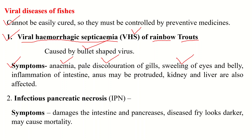Further symptoms of VHS include oedema of muscles, inflammation of the intestine, and sometimes sores may appear on the skin. The anus may protrude, and the kidneys and liver are also affected in this disease. These are the common symptoms caused due to VHS when the bullet-shaped virus enters the body of the fish.